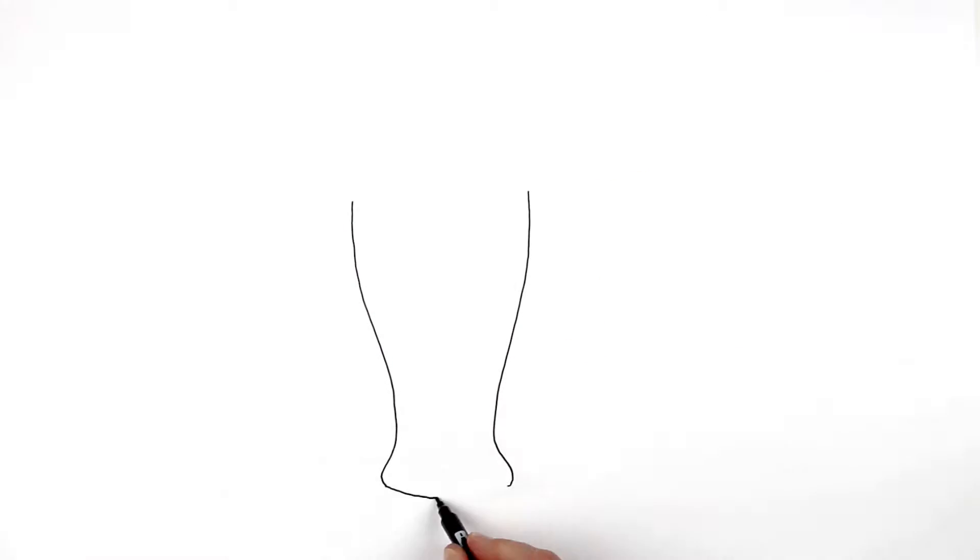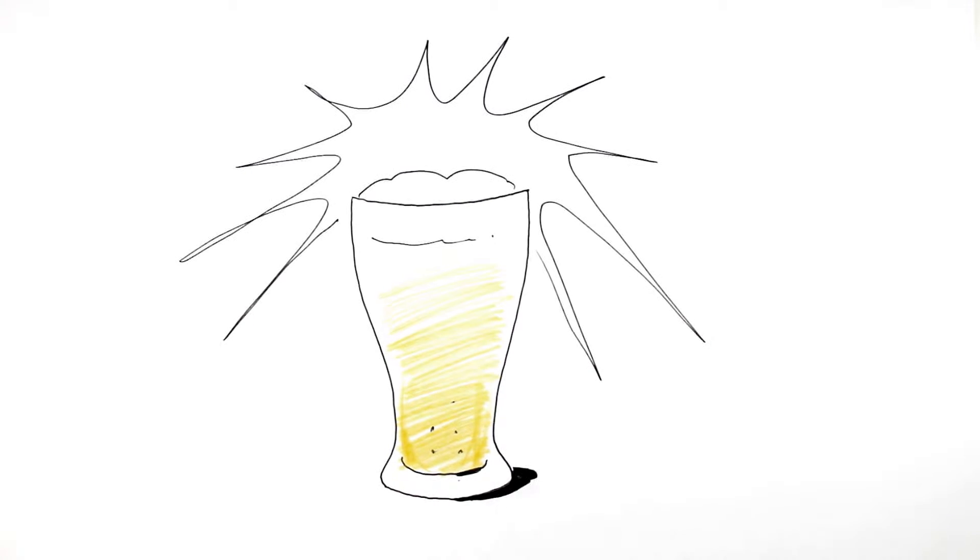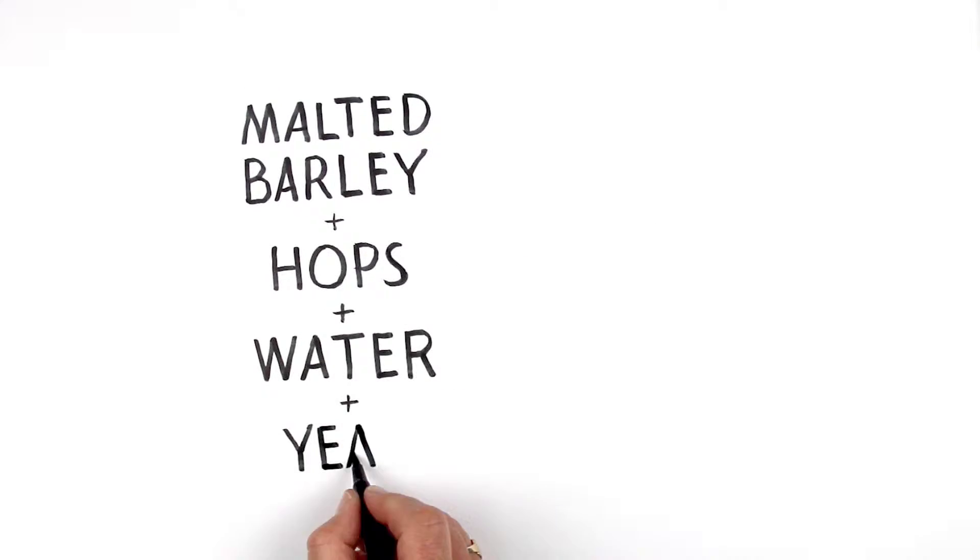The first and absolutely fundamental thing you need to know is that basic beer is mostly made of just four core ingredients: malted barley, hops, water, and yeast.